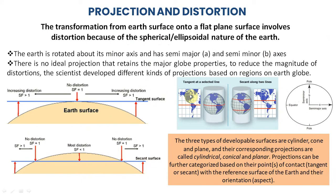We'll look at map projection and what it brings. There's no way to project a map from a curved surface to a planar surface without some kind of distortions and irregularities along the surface. The transformation from the Earth's surface to the planar surface is what actually results in these distortions, so you have to be aware of that — that's the essence of projection. There are three kinds of developed surfaces that scientists have developed to reduce the extent of distortion.